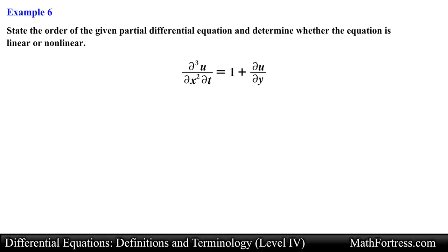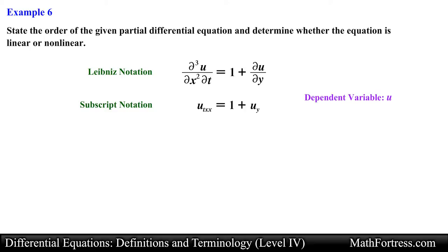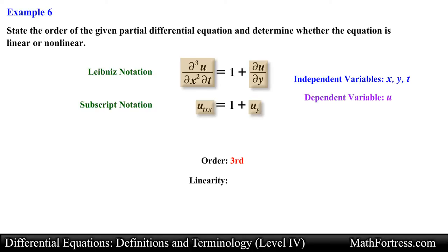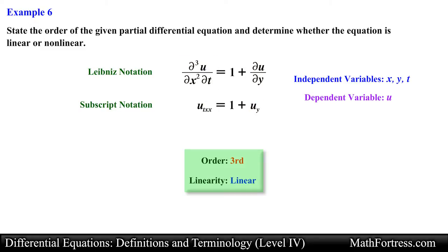Let's move along to the next example. This PDE is written using Leibniz notation. We can also rewrite it using subscript notation. The dependent variable is u and the independent variables are x, y, and t. For the order, this equation contains two partial derivatives: a third partial derivative and a first partial derivative. The higher of these is the third partial derivative, so this PDE is third order. Checking linearity: all partial derivatives are raised to the power of 1, there are no products in terms of the dependent variable next to either partial derivative, and there are no transcendental functions in terms of u. So this PDE is linear. In the end, this equation is a third order linear PDE.